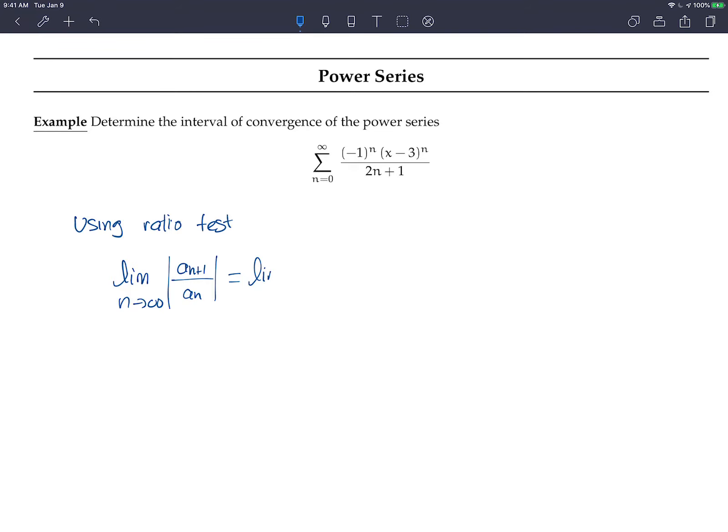So I'm going to write it like this. I'm going to have negative 1 to the power of n plus 1, x minus 3 to the power of n plus 1, divided by 2. Be careful here, I have to write 2 times the n plus 1 plus 1, right?